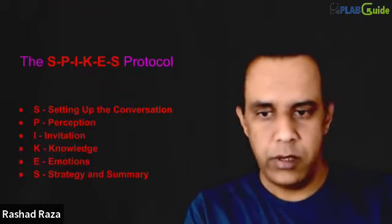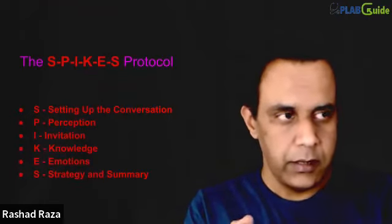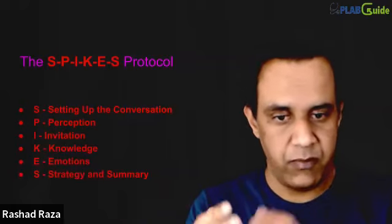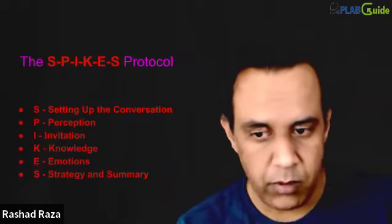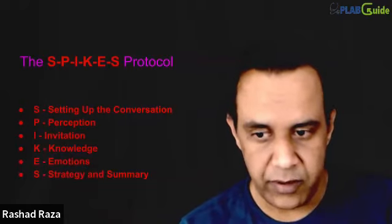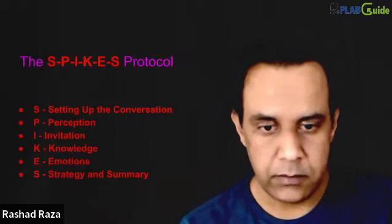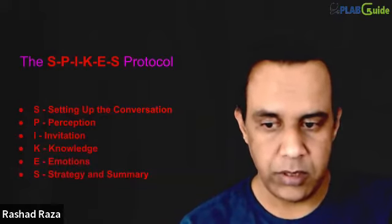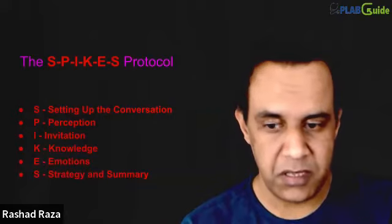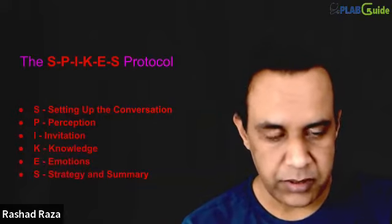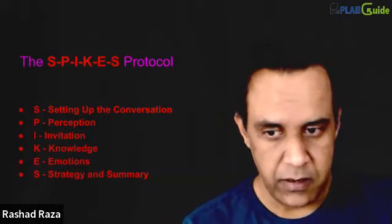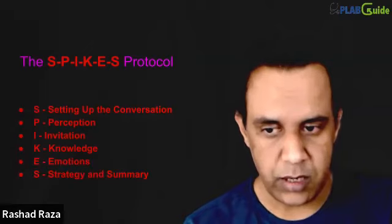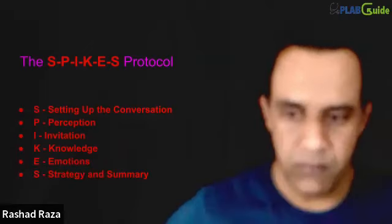We have a protocol called SPIKES. S stands for Setting up the conversation, where we create the right atmosphere. Then P for Perception, I for Invitation from the patient, K for Knowledge, E for Emotion — sympathy and empathy — and the final S stands for Strategy and Summary. We will continue applying this in the next scenarios, practicing them one by one.